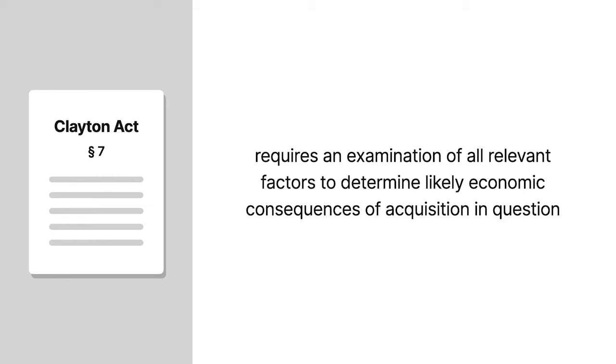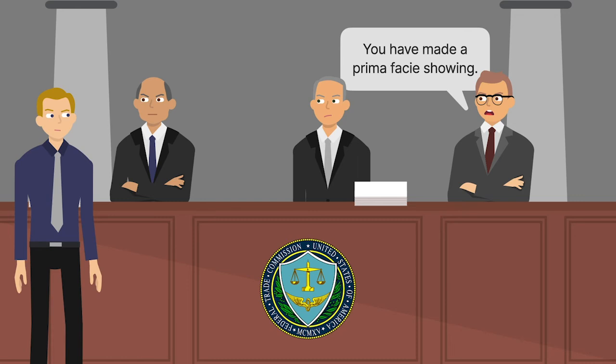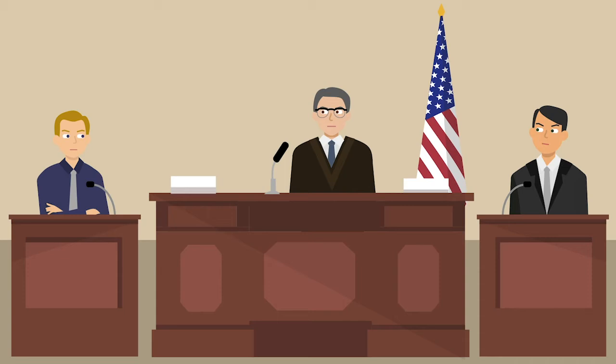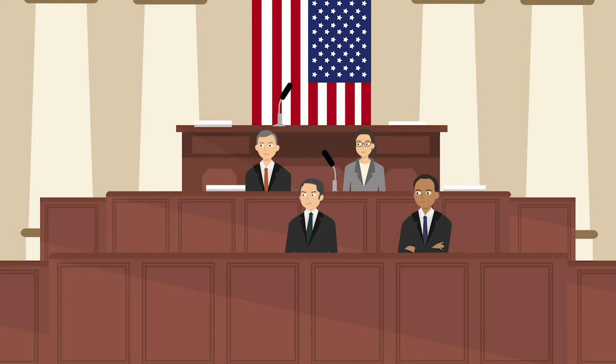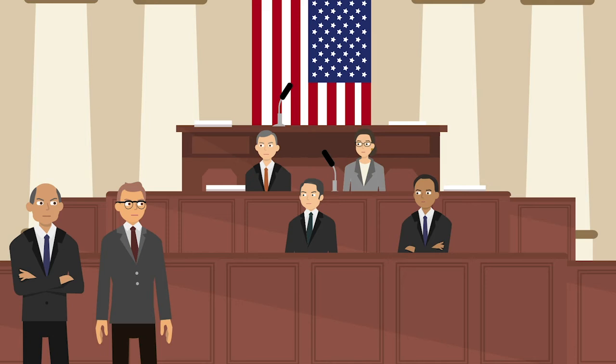After finding that the government had made a prima facie showing under that test, the FTC remanded the case to the hearing officer so that Pillsbury could present its evidence. Both parties were still presenting their evidence to the hearing officer when two congressional subcommittees started holding hearings on antitrust matters. FTC Chairman Edward Howery testified at the hearings, as did the FTC's general counsel, who later became the chairman and wrote the final decision in the Pillsbury case.